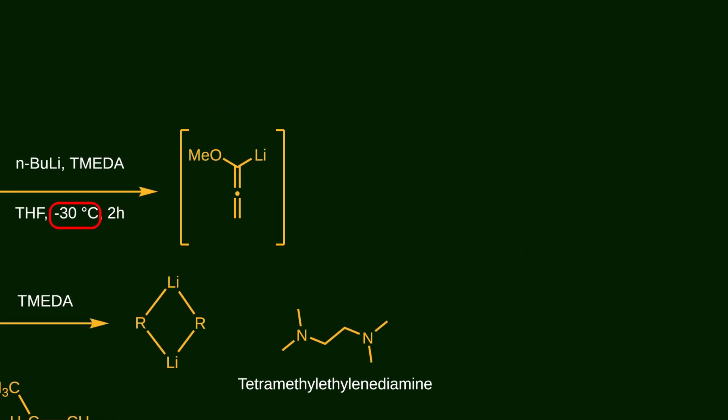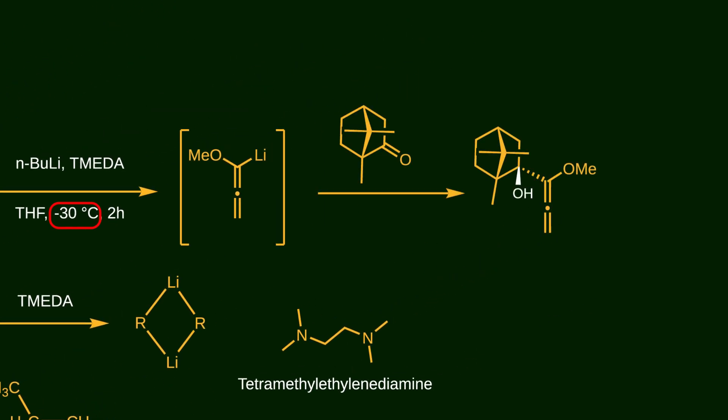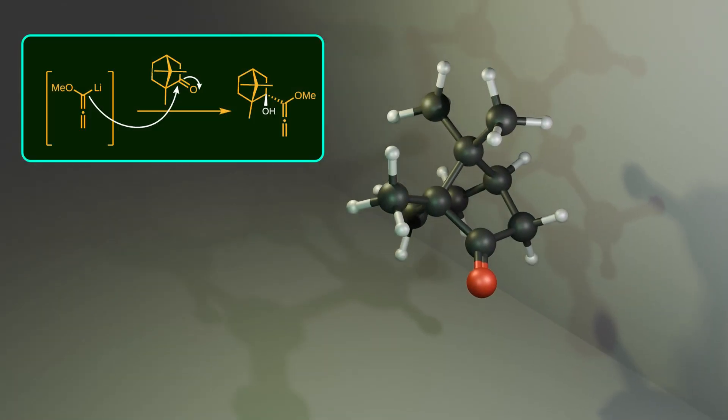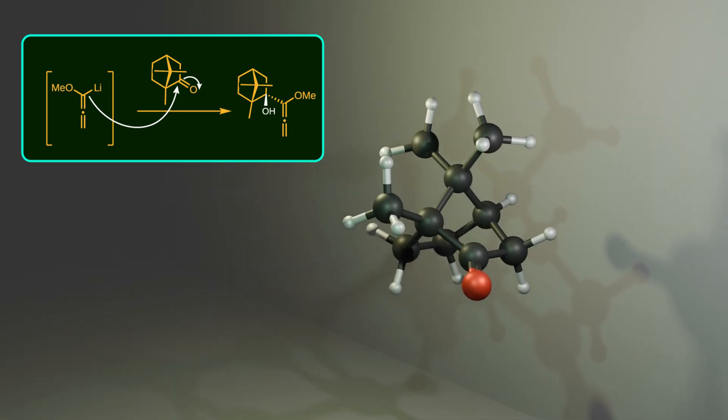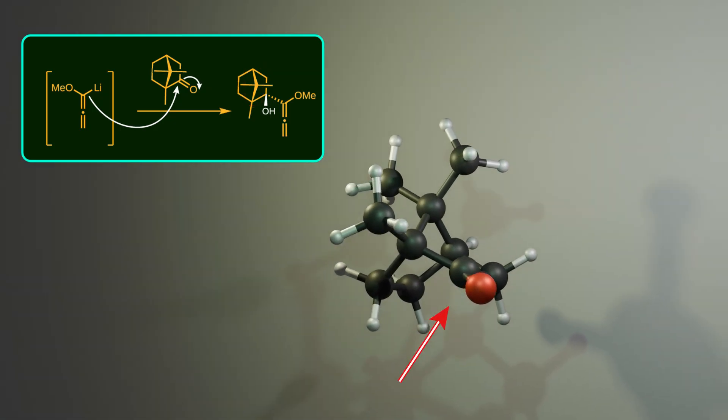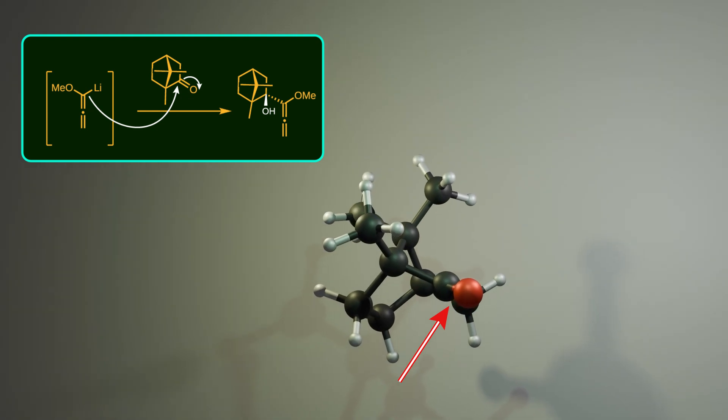After activating methoxyallene, an enantiomerically pure camphor is added to the mixture. Now the stage is set for nucleophilic attack of methoxyallene on the carbonyl group of camphor. Notice that the isopropylidene bridge points toward the front. Because of this steric hindrance, the nucleophile attacks from the opposite face. As a result, the newly formed alcohol ends up pointing outward.